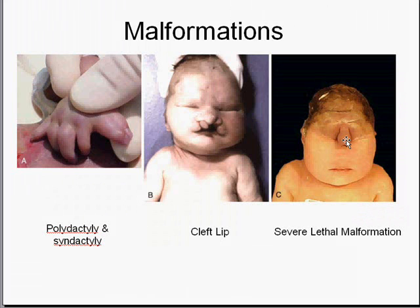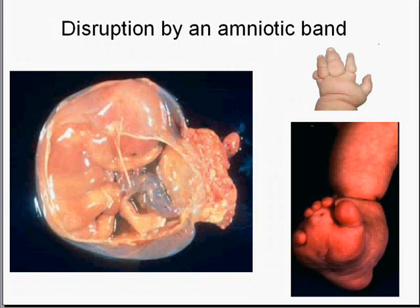Some lethal malformations are quite grotesque, and something like this is incompatible with life. A severe external malformation is very often associated with internal malformations as well. You wonder how the fetus or embryo could have even gotten that far in development. A disruption is not a malformation, but a tissue or limb or organ which is developing properly and then disrupted by an external force. One of the most common causes of disruptions are amniotic bands, in which you have thickenings or fibrosis of the amnion putting constrictions on usually extremities — these are classical disruptions.